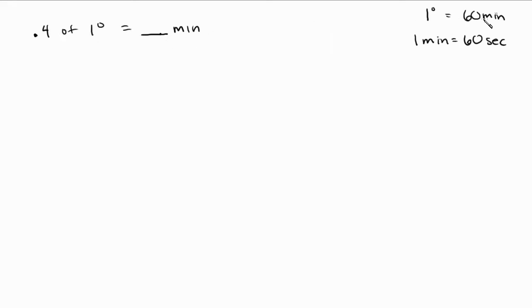Well, if 1 degree is 60 minutes, so what I'm saying is 0.4 of means times, and 1 degree is 60 minutes, is going to give me 0.4 times 60. You can use your calculator. You're going to get 24 minutes. Simple. Now let's do it again.